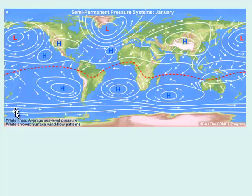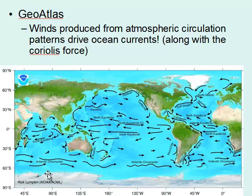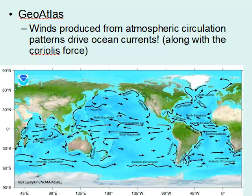These high and low pressure systems affect more than just the air — they also help to drive some of these ocean currents. Ocean currents are basically the movement of a large quantity of sea water in the ocean. Lighter colors refer to faster moving currents, the darker blues are slower. These currents can flow at the surface and also at deeper depths. Because we have these winds produced from atmospheric circulation, these winds directly affect ocean currents. Where we have wind patterns blowing at the equator from east to west, we end up with ocean currents moving that way as well — there's a direct correlation between those two.